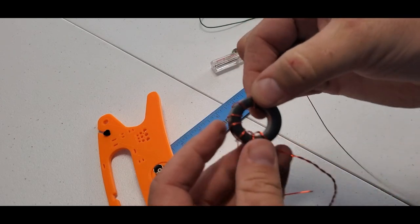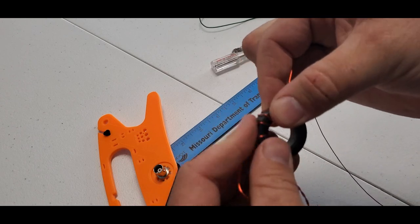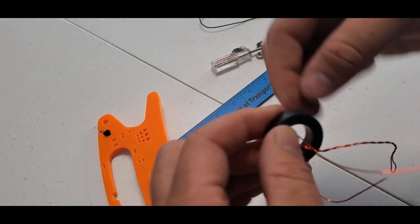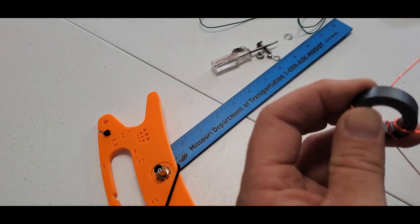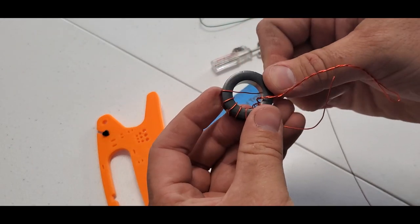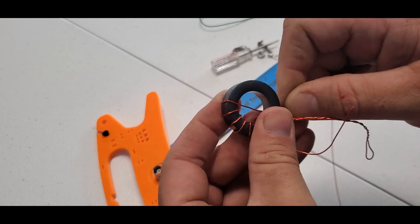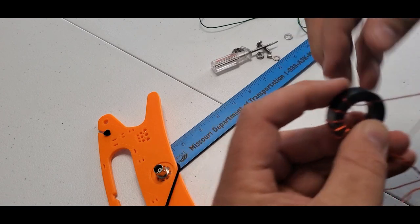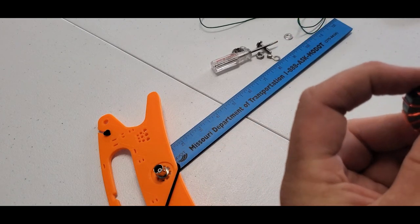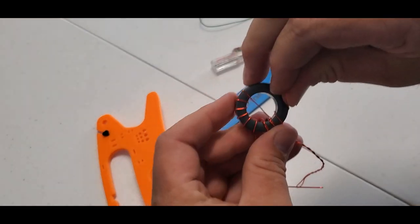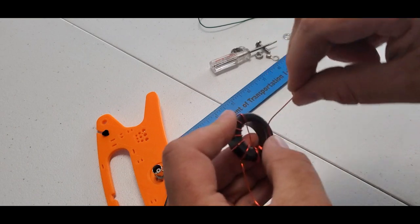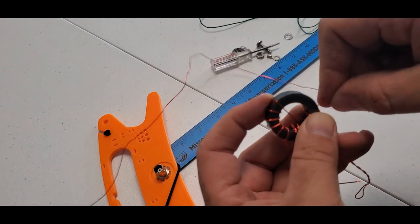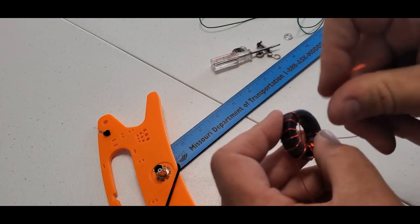Now on this eighth one, let's push these together a little bit here. On this eighth one, when we push it through, we're going to cross over it to the other side and we're going to start winding the other way. So now we're winding the opposite direction and we're going to do this until there's a total of 14 wraps of wire around this toroid.